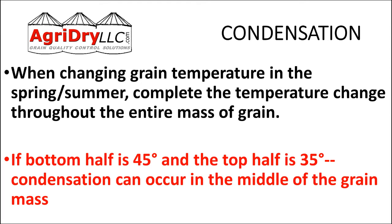If we don't make that temperature change uniformly, that's where we could have potential condensation forming in the middle level — a crust, a bridge, whatever you want to call it — forming in the center of the bin from condensation. In this example, with 45 degrees on the bottom and 35 degrees on top, right in the middle is where we're going to have that condensation layer.